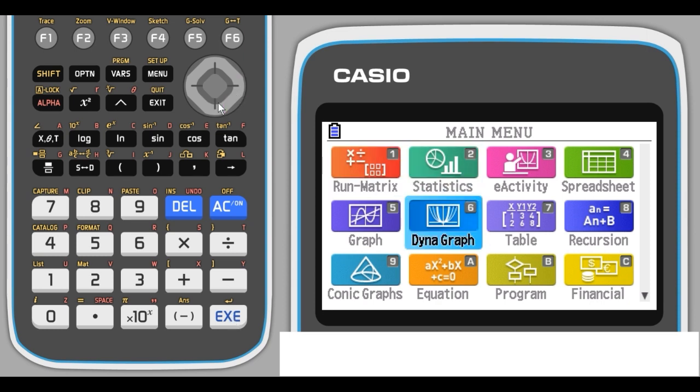Alternatively, from anywhere on the keyboard, you can just press the number of the menu item. And for some menu items this might be a little bit easier. So we want to go into the Run Matrix option. This is for basic calculations, so rather than scroll to it, I'm just going to press the number 1 on the keyboard.